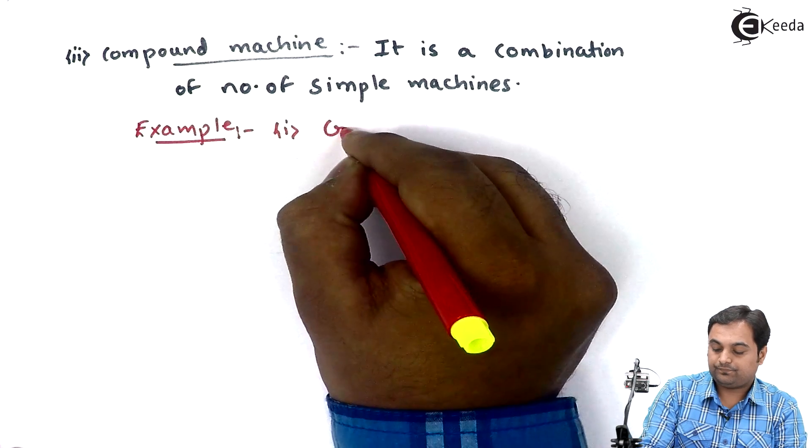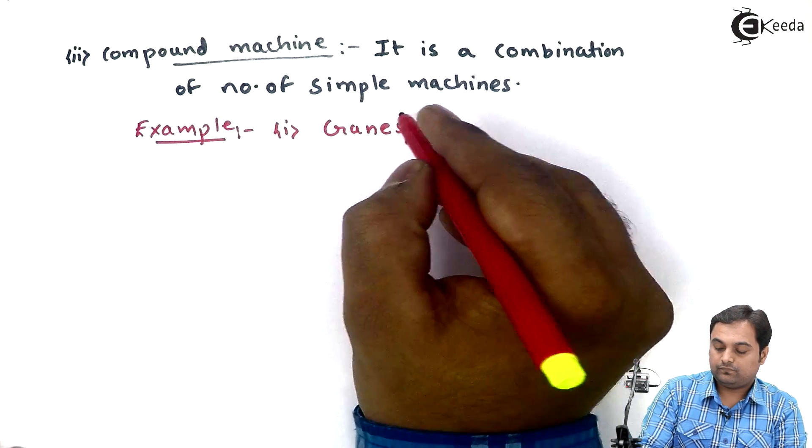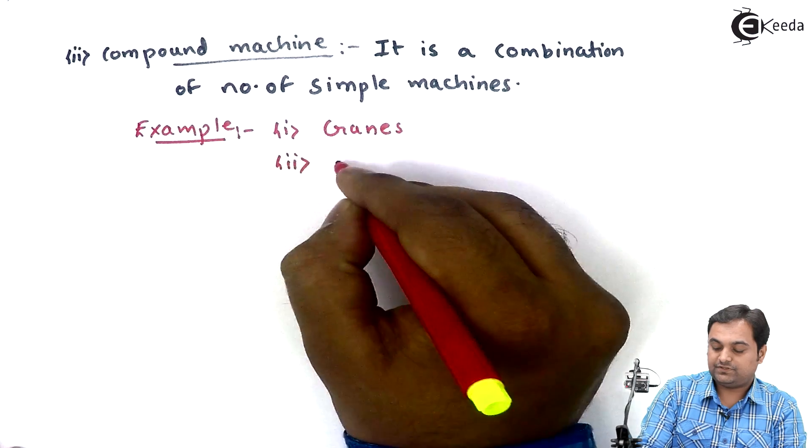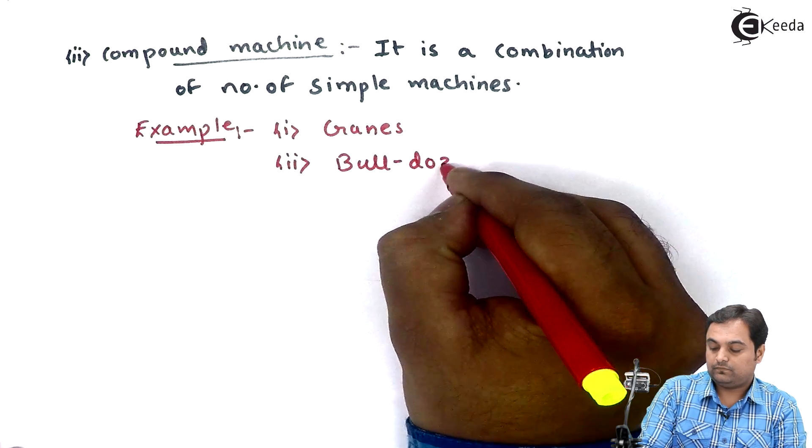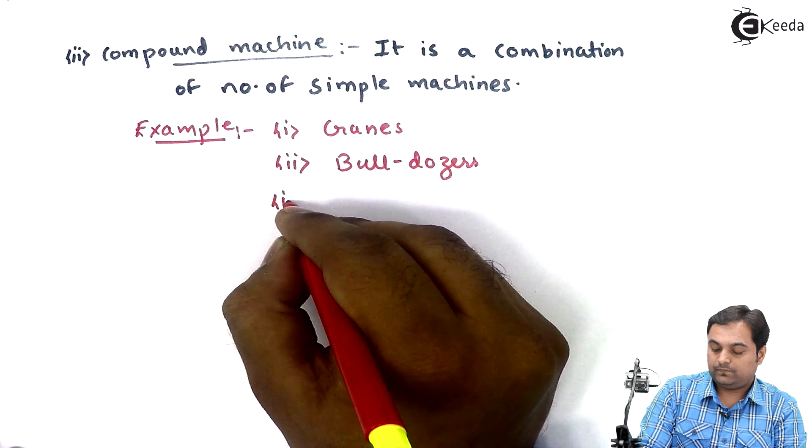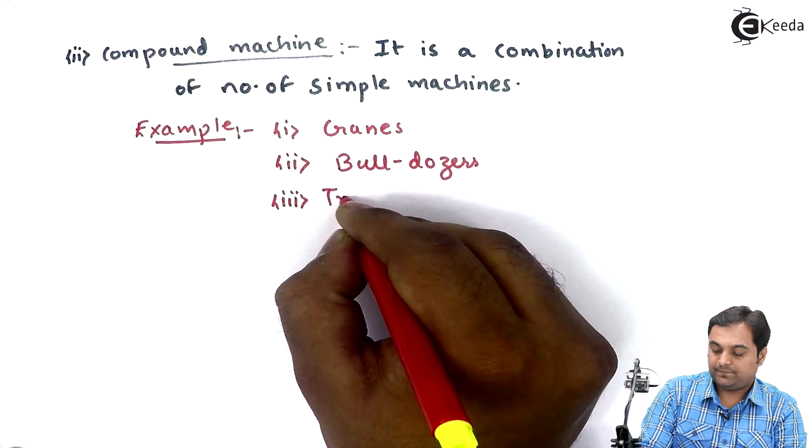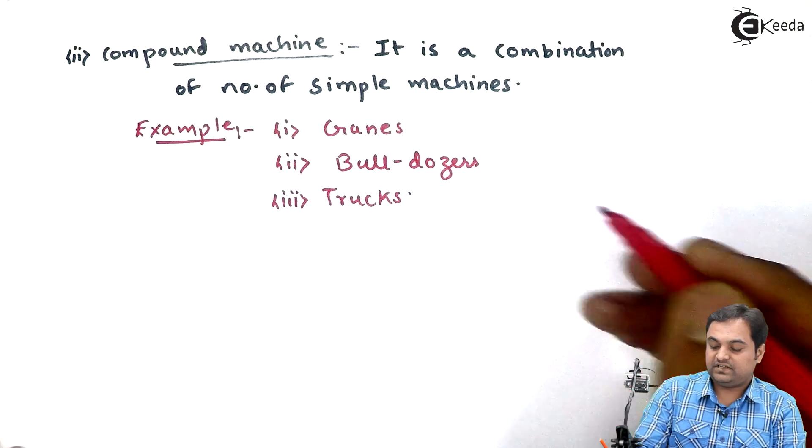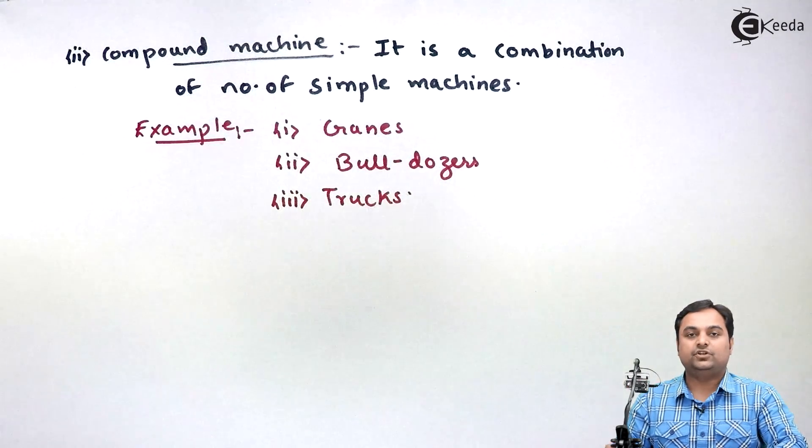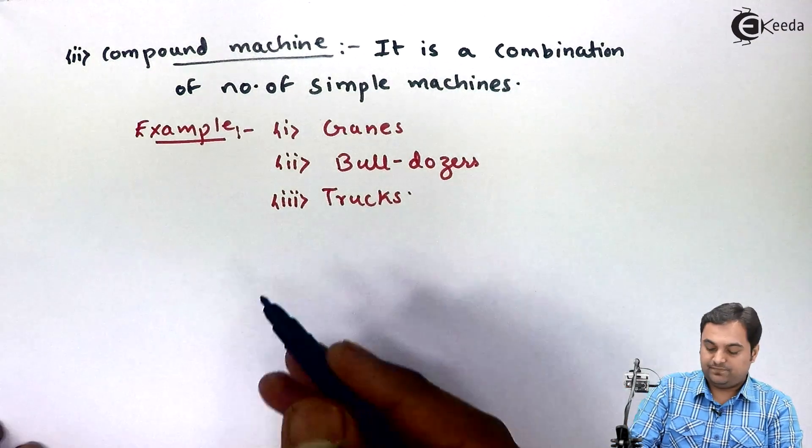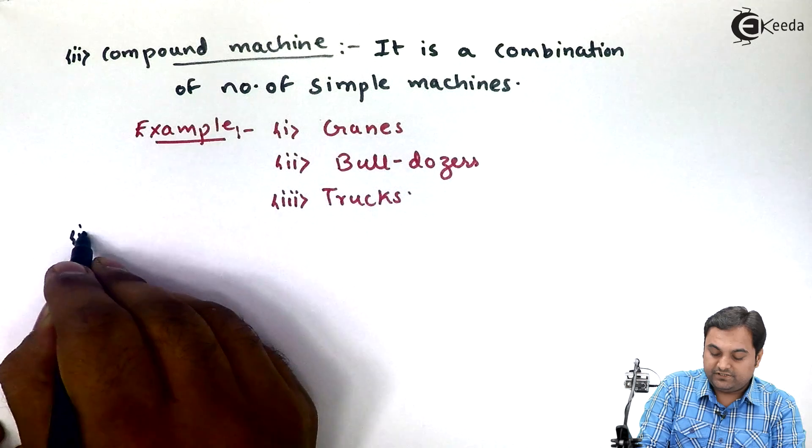Example: cranes, bulldozers, trucks, etc. So these are some examples of compound machines where we have combinations of simple machines.